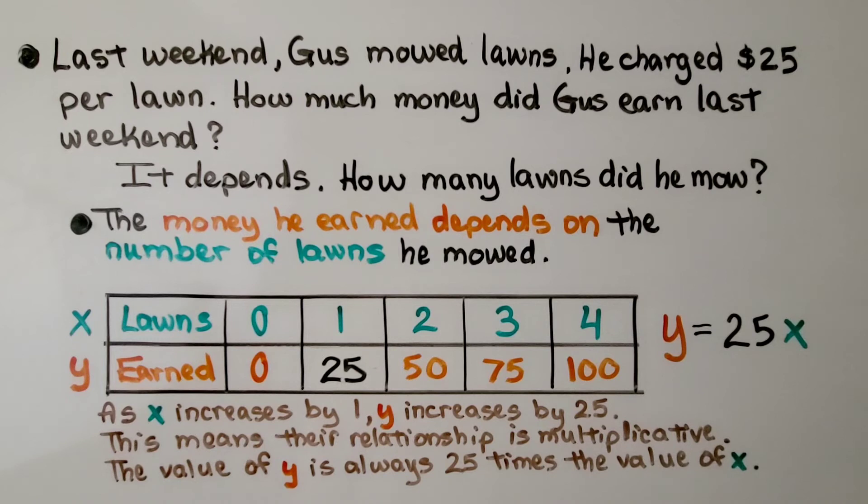Last weekend, Gus mowed lawns. He charged $25 per lawn. How much money did Gus earn last weekend? It depends. How many lawns did he mow? The money he earned depends on the number of lawns he mowed.